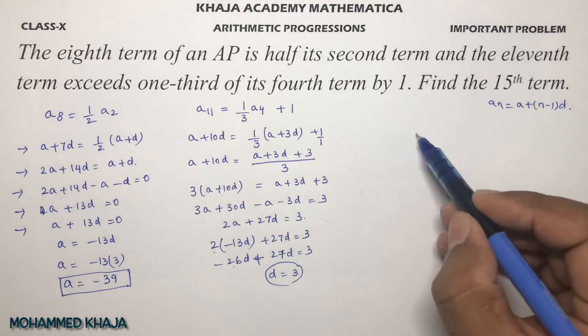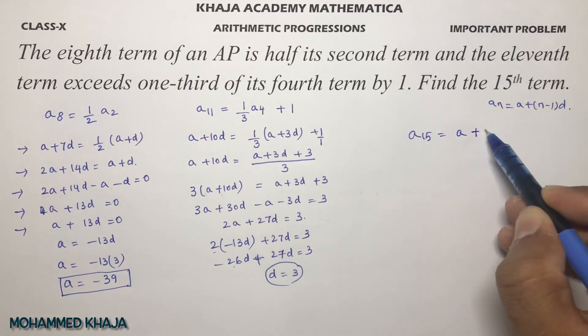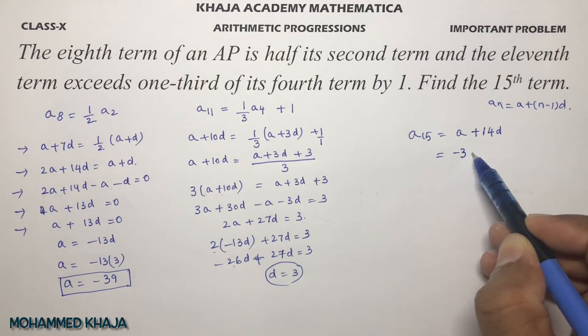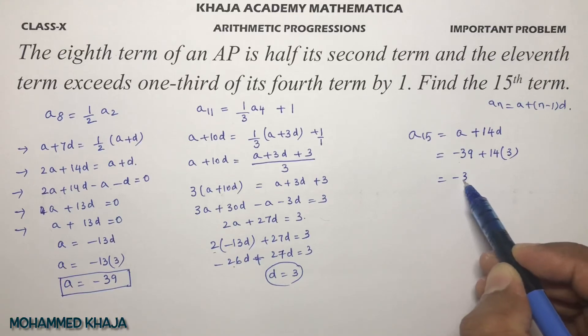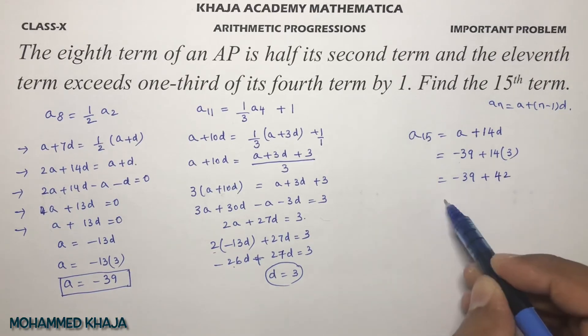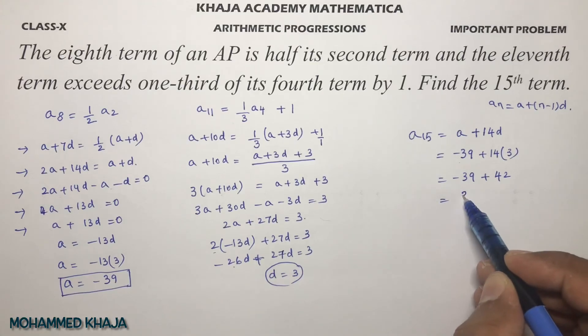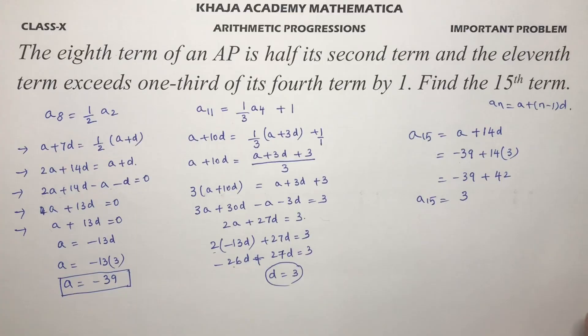We need to find the 15th term. a₁₅ equals a plus (15 minus 1)d, which is a plus 14d. The value is minus 39 plus 14 times 3. Minus 39 plus 42 equals 3. Therefore, the 15th term of the AP is 3.